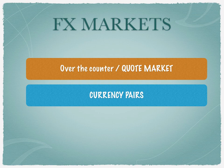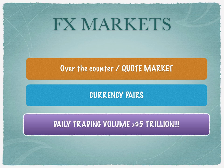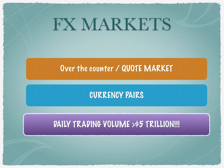In FX, every currency is quoted against another currency, and therefore trading takes place in something called currency pairs. A currency pair means we are quoting the reference currency against the base currency. With a trading volume of almost 6 trillion dollars, FX markets are extremely standardized with reference to quotations, the three-alphabet codes assigned to different currencies, settlement cycles, and time zones.